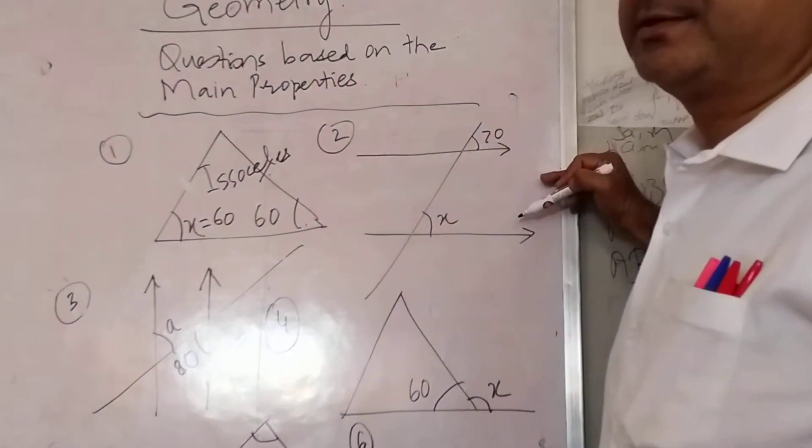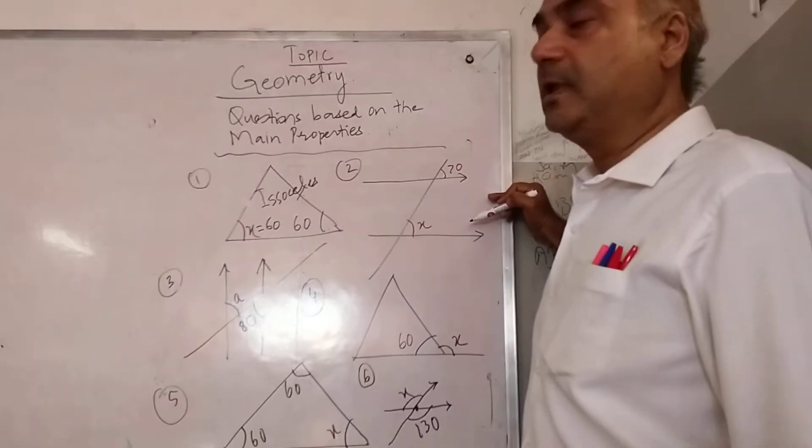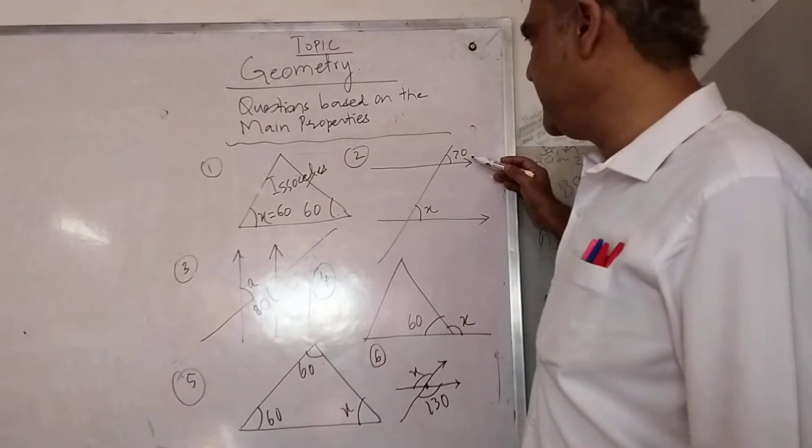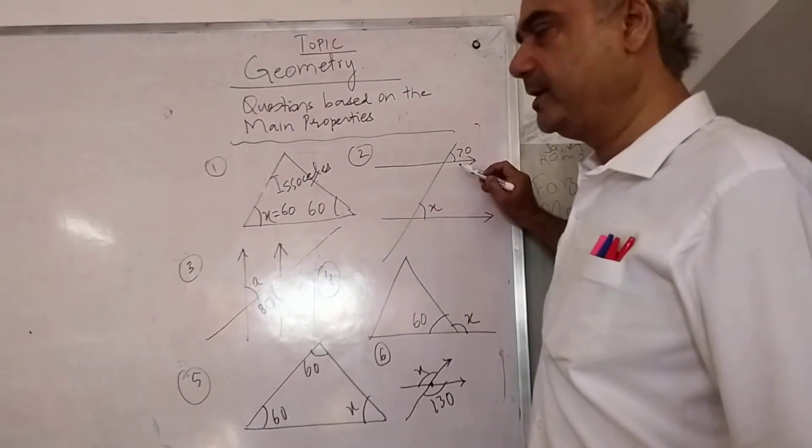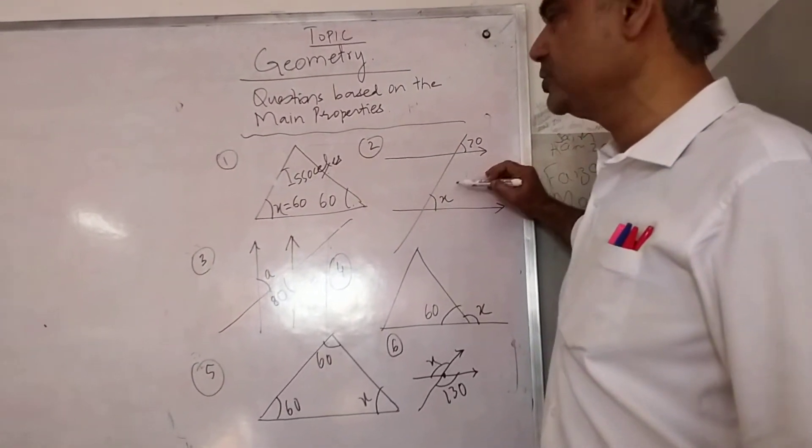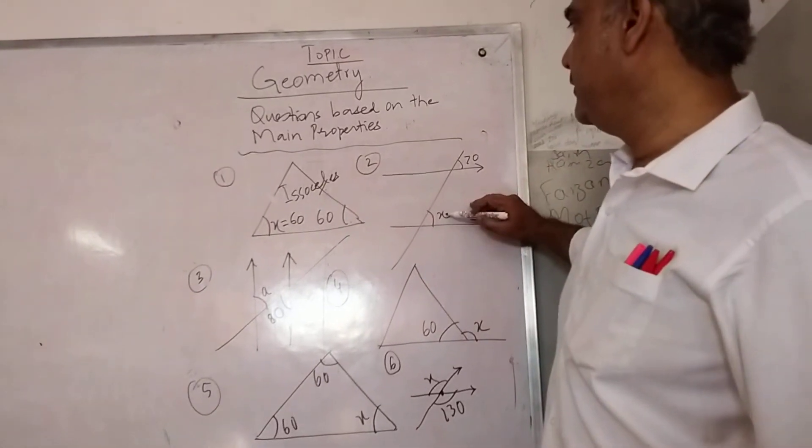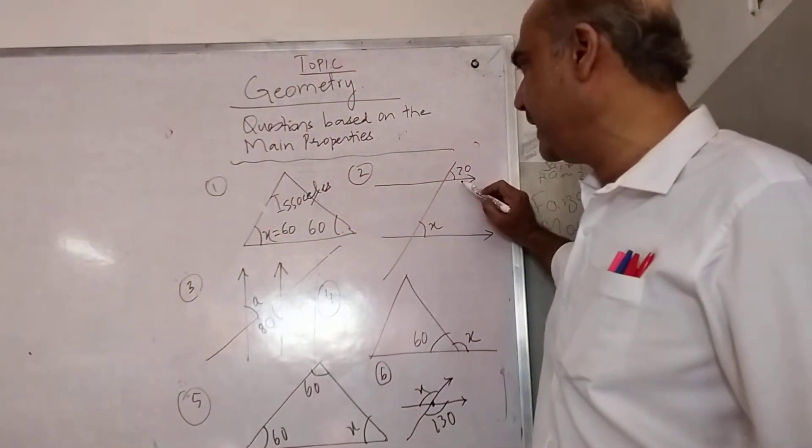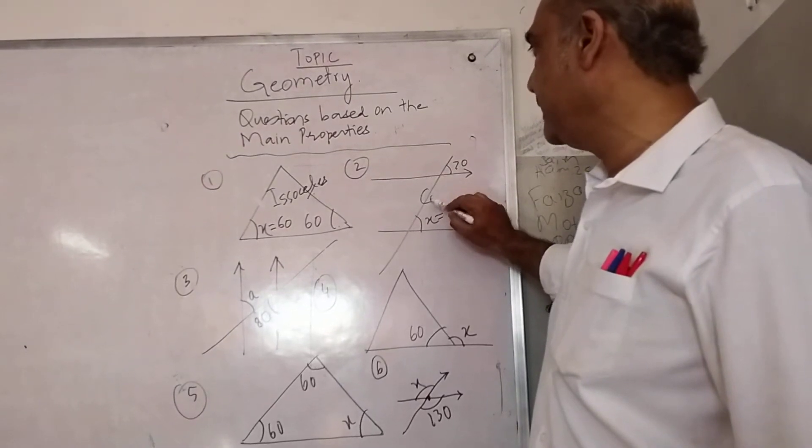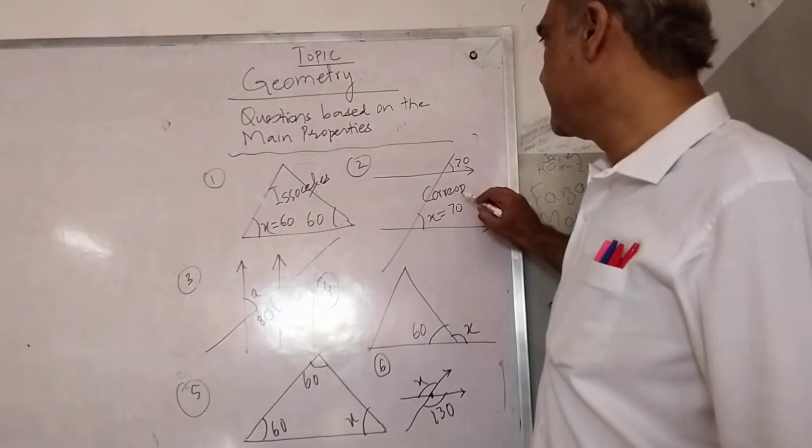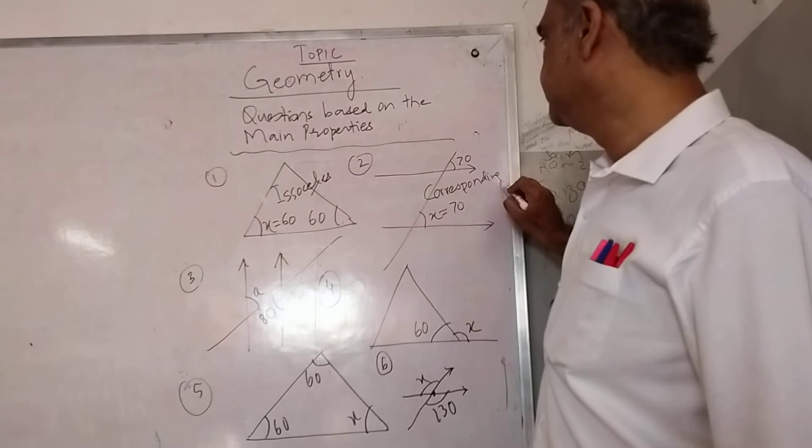What do these arrows represent? They are parallel lines. So it means that if they are parallel lines, the angles on the same side will be considered as corresponding angles. So this X equals to 70. And what is the reason? Corresponding angles.